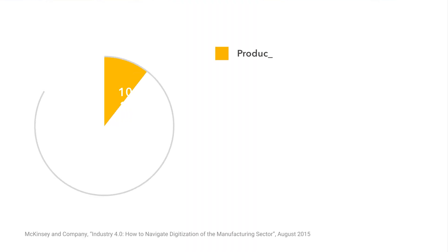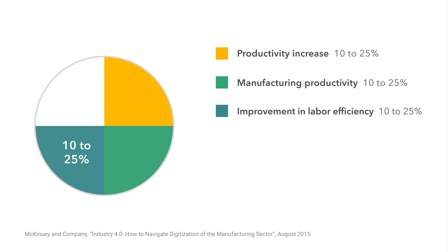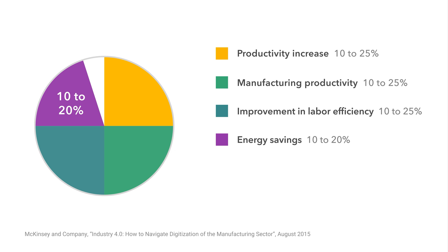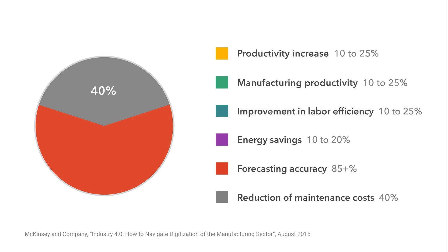Numerous reports assess the use of sensors and software solutions to increase manufacturing productivity by 10 to 25%, with the potential to create as much as $1.8 trillion in new value per year across the world's factories by 2025. Aside from productivity improvements, digitalization of manufacturing promises 10 to 25% improvement in labor efficiency and energy savings of 10 to 20%. Software and sensor solutions also facilitate predictive and preventive factory equipment maintenance and reduce maintenance costs by up to 40%.